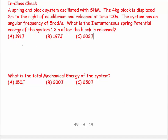Now for a problem: a spring-and-block system oscillates with simple harmonic motion. The block is 4 kilograms, so m = 4 kg. It's displaced 2 meters to the right from equilibrium, so A = 2 m. It's released at t = 0, and the system has an angular frequency ω = 5 rad/s. We want to find the instantaneous spring potential energy at t = 1.3 seconds.